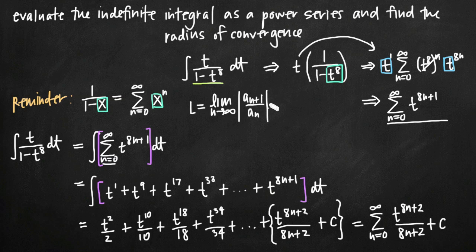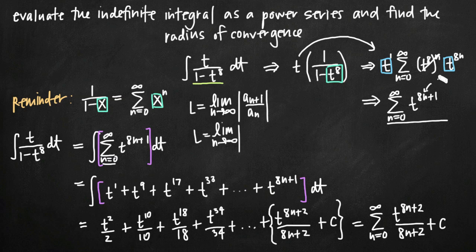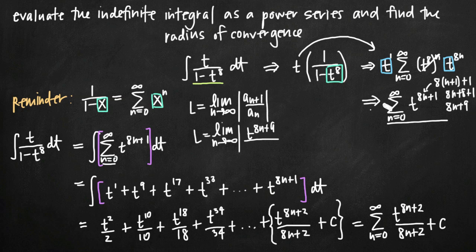If the value of l is less than 1, the series converges. So we find the right-hand side, set it less than 1, and use that to find the radius of convergence. To find a sub n plus 1, we plug n plus 1 in for n everywhere in our general term. The exponent becomes 8 times (n plus 1), which gives 8n plus 8 plus 1, or 8n plus 9. So a sub n plus 1 is t to the 8n plus 9, and we divide that by a sub n, which is t to the 8n plus 1.